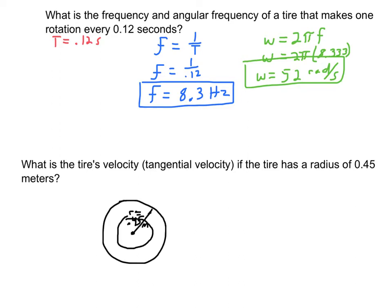The next problem is slightly similar but a little different. I have the exact same tire, and I want to know how fast it's turning — what's the tire's velocity? That's the tangential velocity, or how fast is the edge of the tire going.